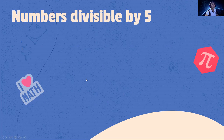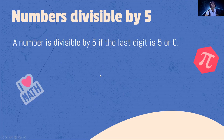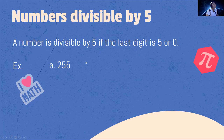Let's move on to the last number: divisibility by 5. A number is divisible by 5 if the last digit is 5 or 0. Examples: 255 ends with 5 — divisible by 5. 300 ends with 0 — divisible by 5. 725 ends with 5 — divisible by 5.